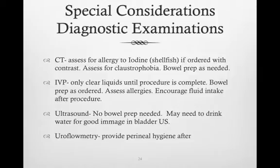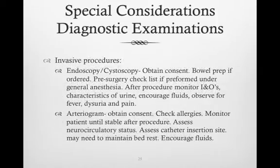The nurse will need to assess the patient's sensitivity to the dye before beginning the procedure. Endoscopy or cystoscopy is direct visualization and/or specimen collection of the bladder or urethra, and can be done under general anesthesia. An arteriogram is visualization of the renal arteries with contrast injected intravenously while radiographs are taken in rapid succession. The nurse may need to assess the catheter insertion site, have the patient maintain bed rest, and encourage fluids after the procedure to clear the dye.